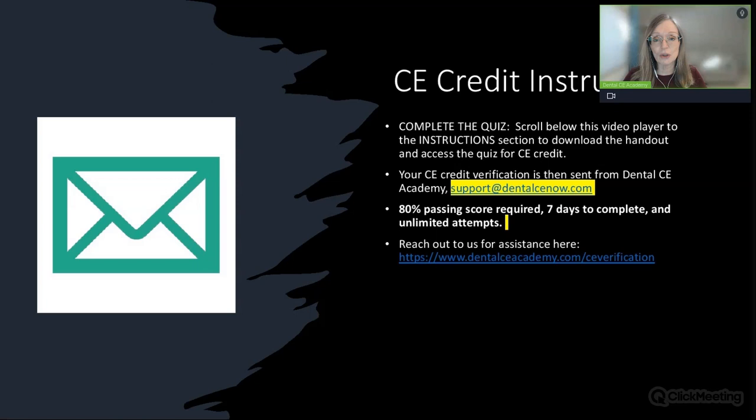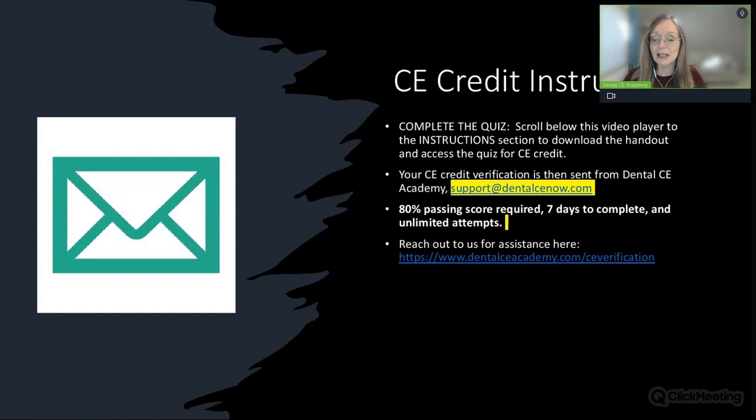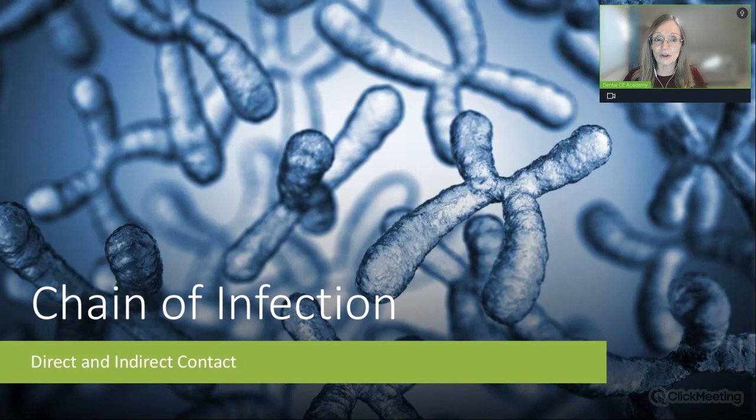CE credit instructions: this is a recording, so please drop below the video player. Go to the instructions section—number three is the quiz, number two is the handout. You'll complete that quiz directly from our website. You'll need an 80% passing score, seven days to complete, unlimited attempts, and there is a link should you need assistance with CE credit.